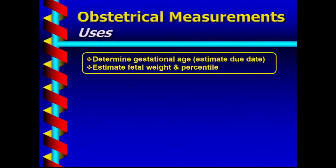There are a number of uses of obstetrical ultrasound measurements. The two main ones are to determine the gestational age, which is used to estimate the due date of the pregnancy, and also to estimate the fetal weight and the weight percentile. Those are the main ones, but there are many others.